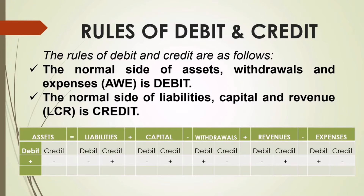Assets, withdrawals, and expenses — if you are going to increase them, you are going to debit, so there is a plus or increase sign on the debit side. If you are going to decrease assets, withdrawals, and expenses, you are going to credit. For liabilities, capital, and revenue, the normal side of LCR is credit. If you are going to increase these accounts, you credit them — that is why the credit side has the plus sign. However, if you are going to decrease liabilities, capital, and revenue, you are going to debit, hence there is a minus sign on the debit side. To recap: the normal side of assets, withdrawals, and expenses is debit; the normal side of liabilities, capital, and revenue is credit.